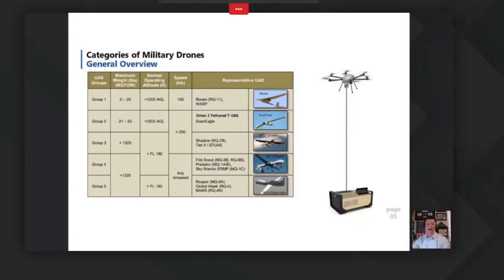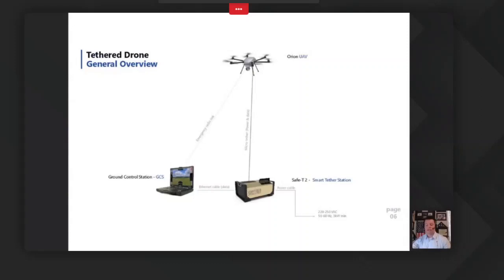In the Department of Defense classification, tethered UAS solutions fall in Group 1 and Group 2 — less than 55 pounds — where a tethering station can provide power. The Orion 2 tethered UAS falls in Group 2 for tactical UAS. The tethered system provides data and power through the tether itself to the station. From that station, RJ45 or Ethernet connectors provide secure data back to the ground control station. An emergency radio link is maintained for manual control if needed.